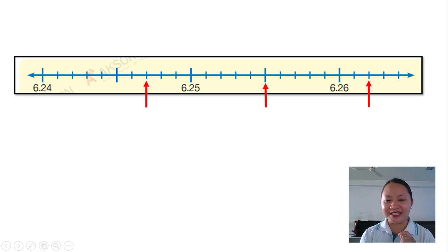You are right. The first arrow represents 6.247. That is equal to 6 and 247 over 1000.